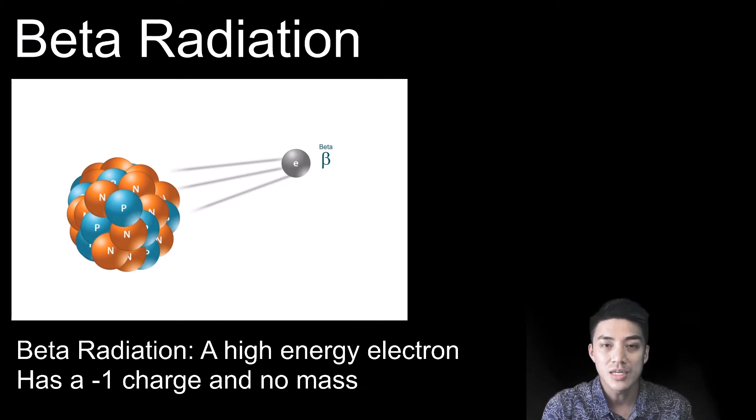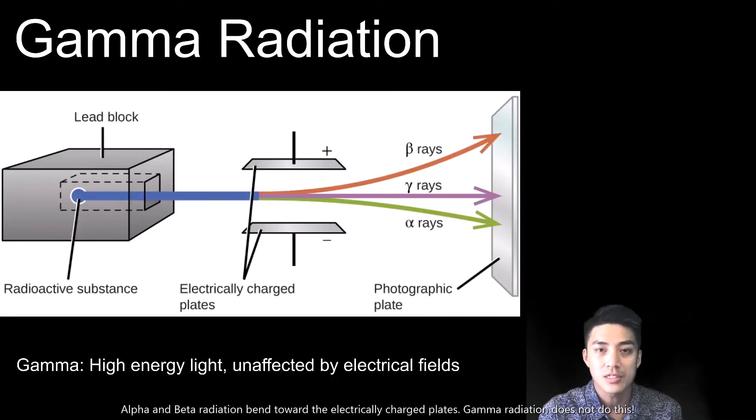Sometimes an unstable nucleus will emit beta radiation, which is a high-speed electron that has a negative one charge and no mass. Whereas alpha and beta radiation are affected by charges, you can see how gamma radiation travels in just a straight line because it has no charge. So it's unaffected by electrical fields.